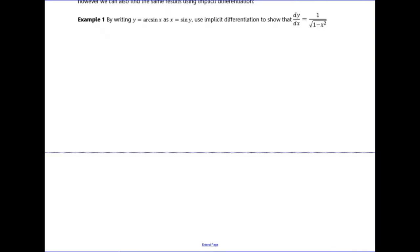This tells us what to do: by writing y = arcsin(x) as x = sin(y), use implicit differentiation to show that dy/dx = derivative of arcsin. So we're going to differentiate this implicitly, differentiating both sides with respect to x.